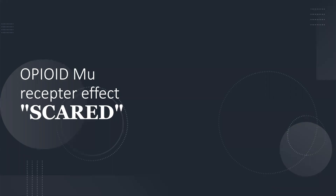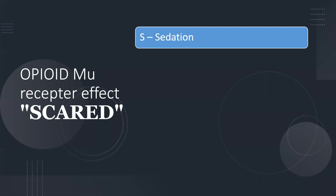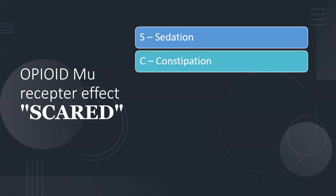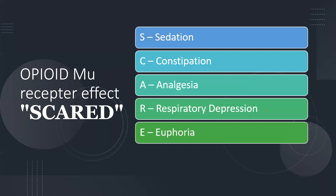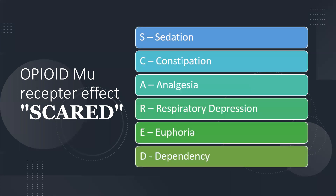For opioid mu receptor effects, use the mnemonic SCARED: S for sedation, C for constipation, A for analgesia, R for respiratory depression, E for euphoria, and D for dependency.